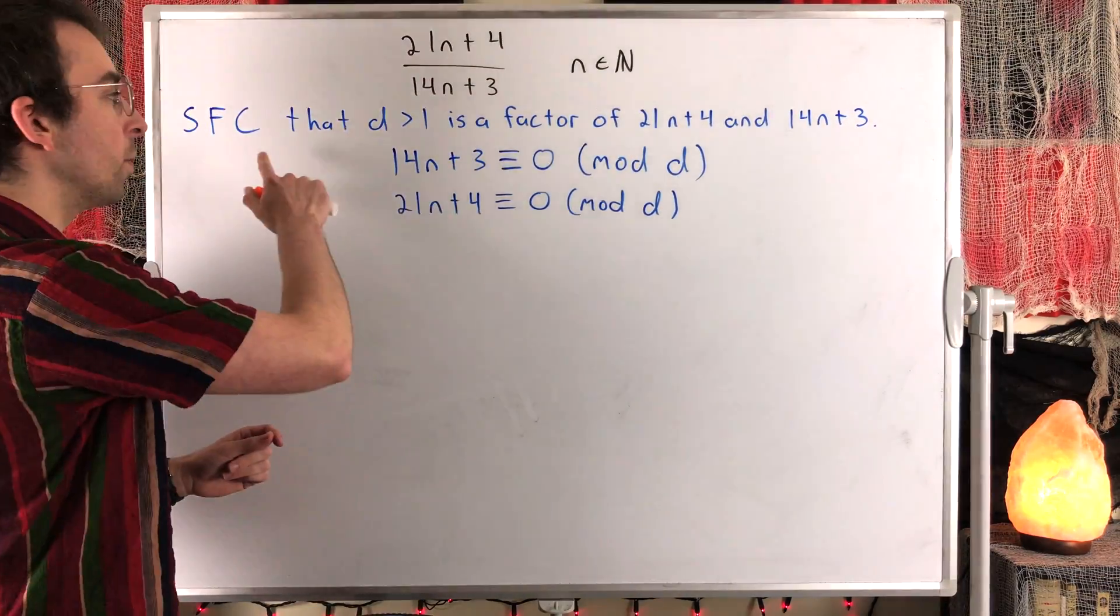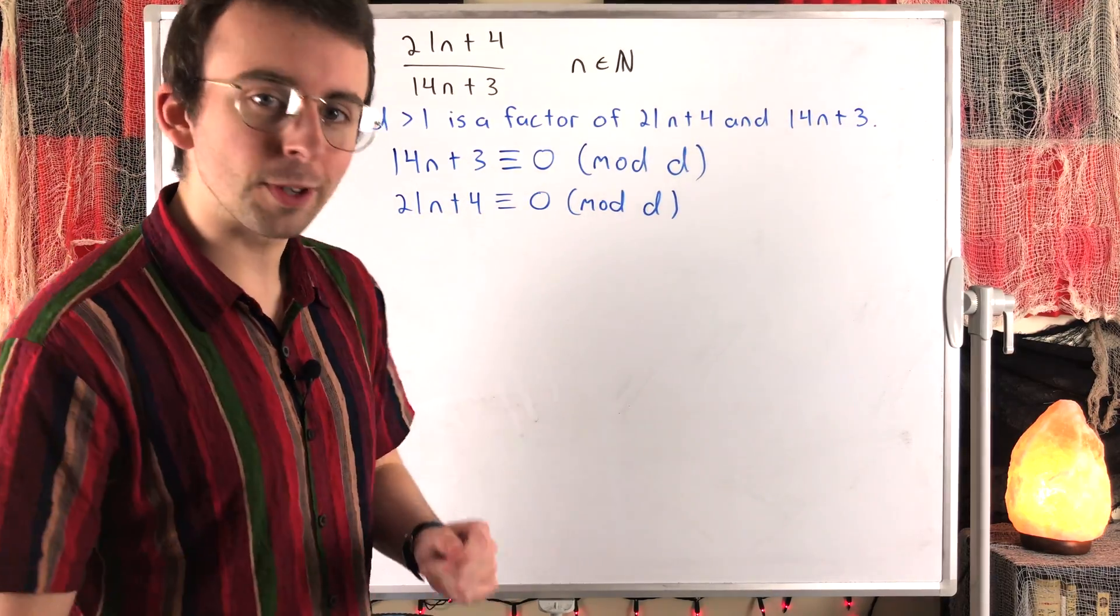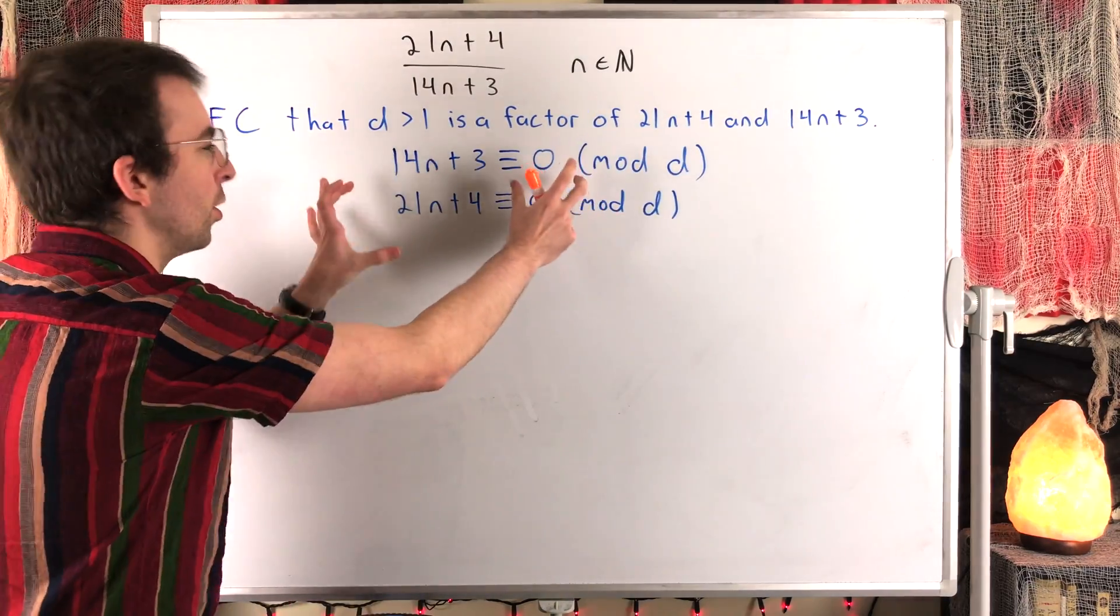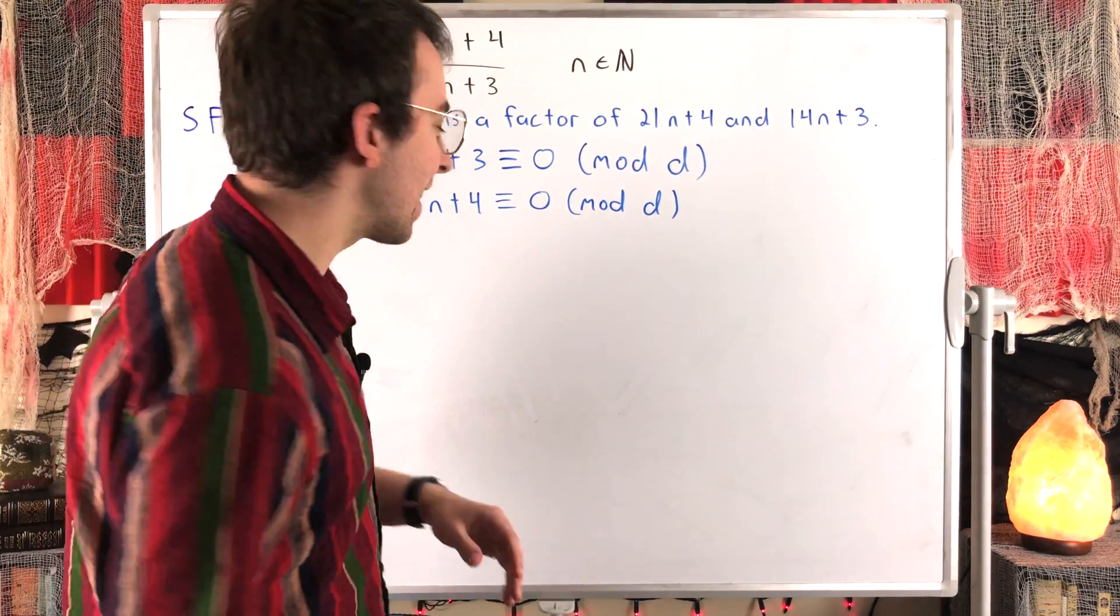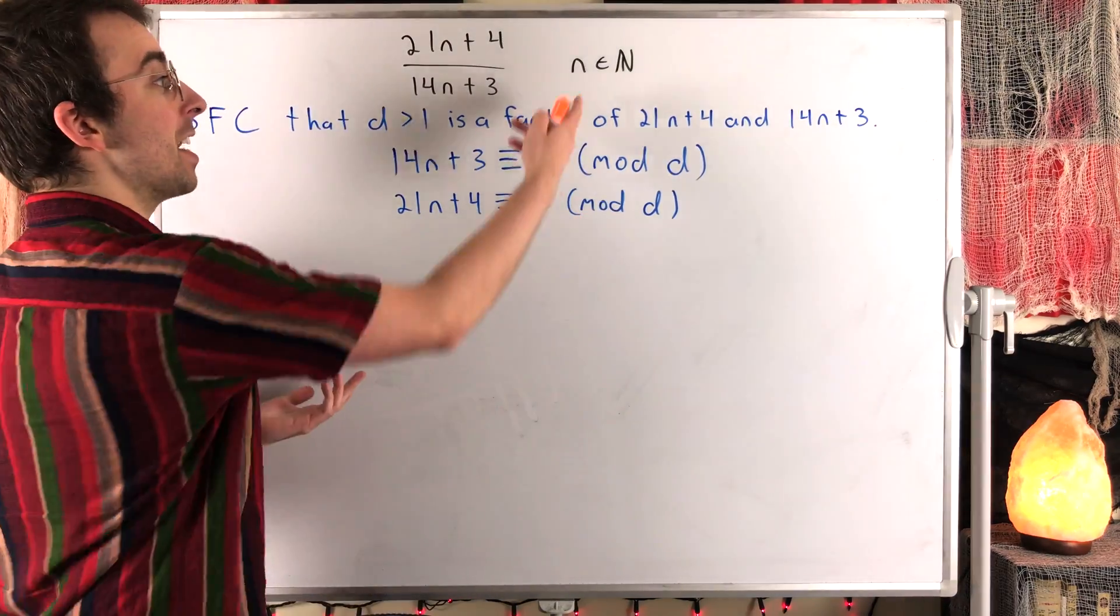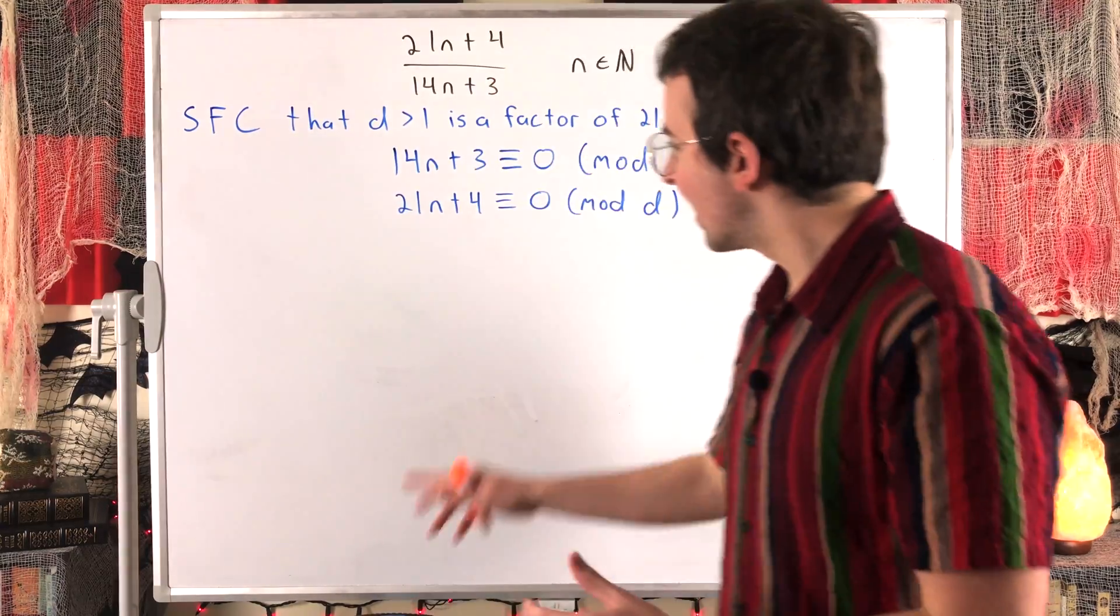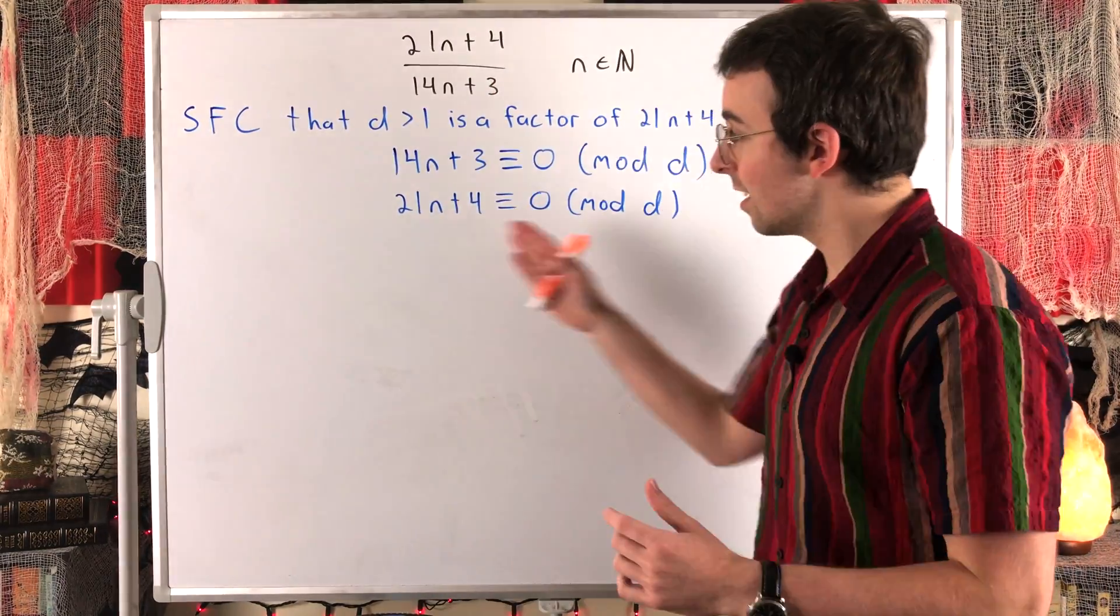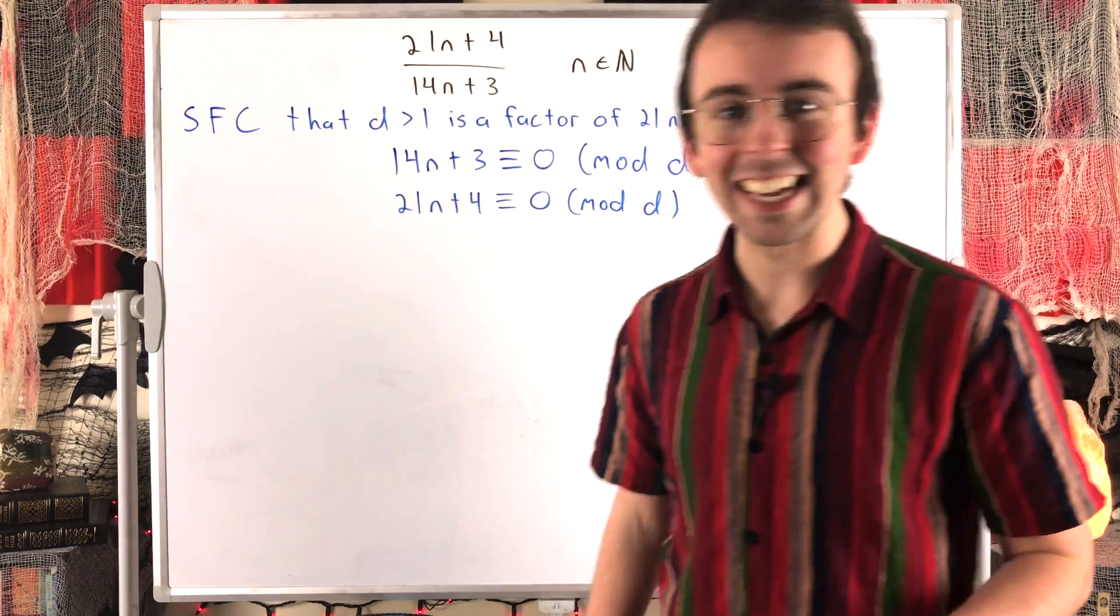Now remember, since we supposed the opposite of what we're trying to prove, we're trying to show that there's some contradiction here. So we're hoping that there's some kernel of falsehood in this pair of statements. Unfortunately, right now, that might be getting sort of disguised by our variable n. n could take on any number of values, it's just some natural number. But maybe if we could find some way to get rid of the n terms in these equivalence relations, in these congruences, then we might be able to identify something that is certainly a contradiction.